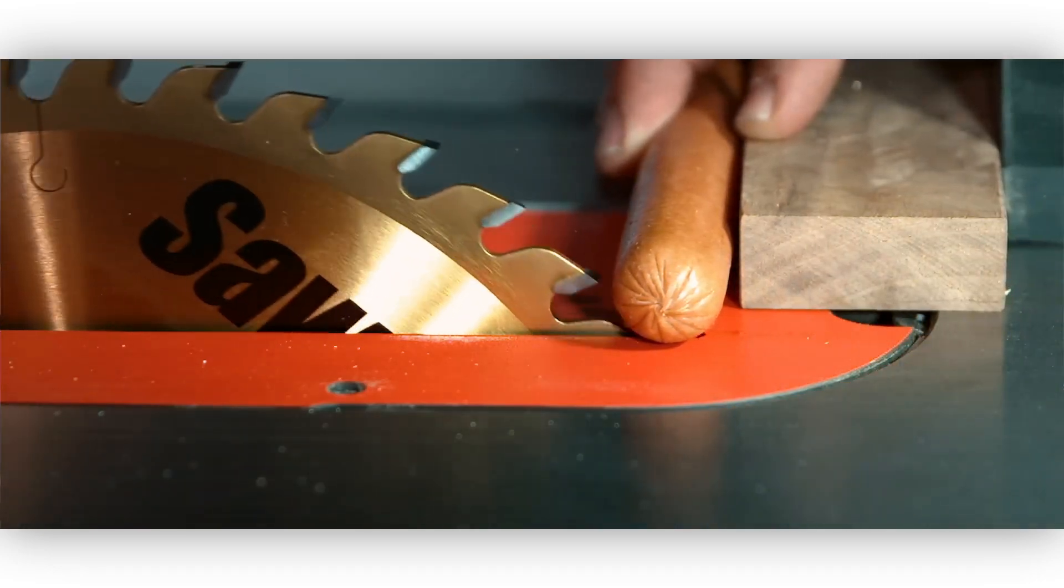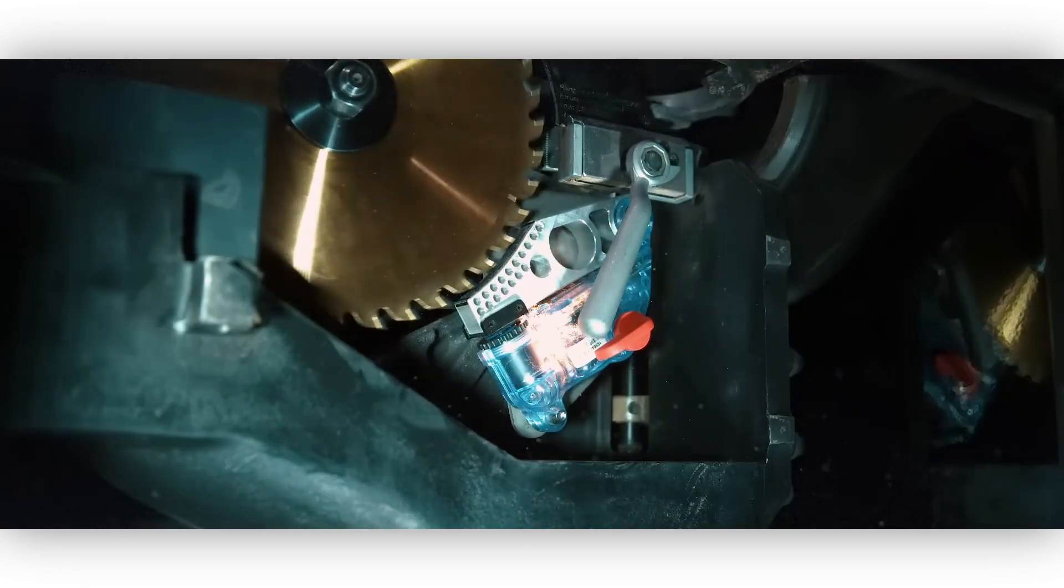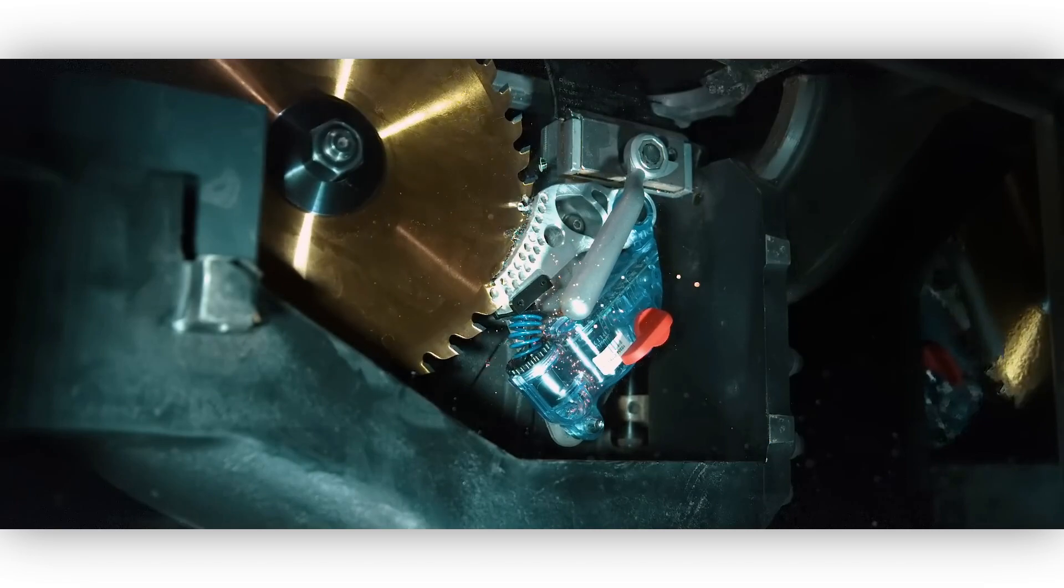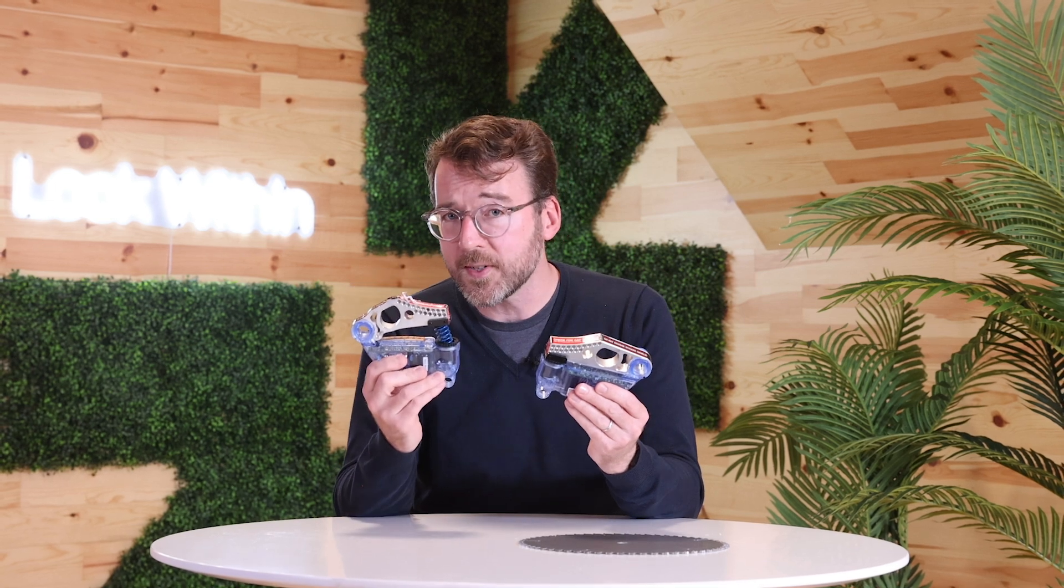You might have seen incredible videos showing SawStops in action. These are electromechanical brakes that are able to stop a spinning table saw blade in as little as 5 milliseconds. That's enough to save your fingers. We used our industrial x-ray CT scanner to look inside both a new and a used SawStop brake in order to understand how this product works.